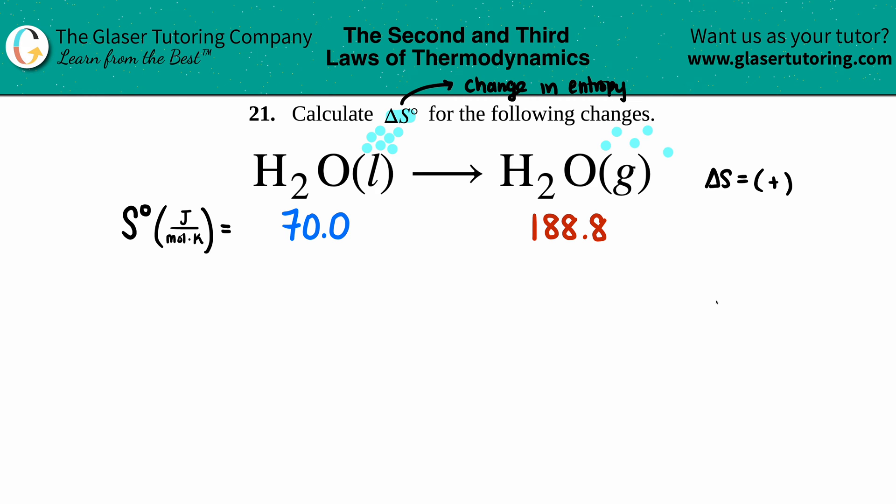Now we just have to find out what's the actual value. Anytime that you see a naught, that means standard, and that means you got to go on the back of the book to find out the actual appendix values for each compound. So that's what I did. I went in the back to find out what the delta S values were for H₂O liquid, which is 70, and H₂O gas, which is 188.8.